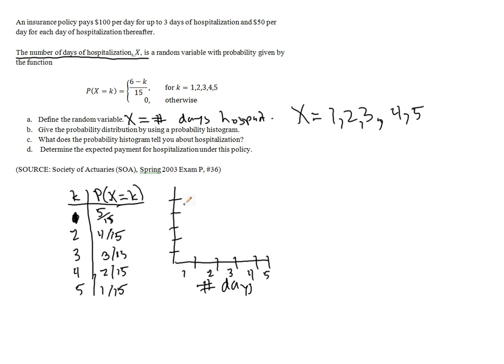And we either have 1, 2, 3, 4, or 5 fifteenths. So we'll pretend these are fifteenths, and these are the probabilities. So we would have 5/15 for day 1, 4/15 for a second day, 3/15, 2/15, and 1/15. So the likelihood that you stay longer gets less.